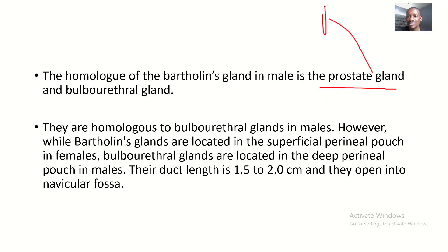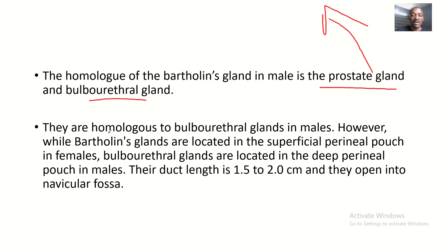To be specific, the prostate gland corresponds more to the Skene's glands in females. So I would say that the homologue of Bartholin's gland in males is specifically the bulbourethral gland — they are homologues to the bulbourethral glands in males.